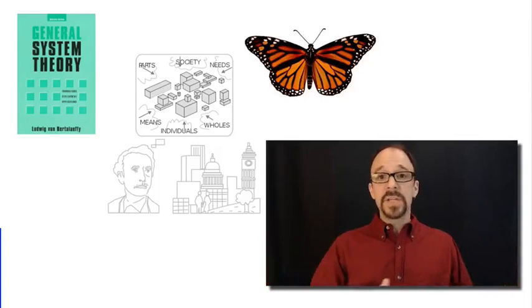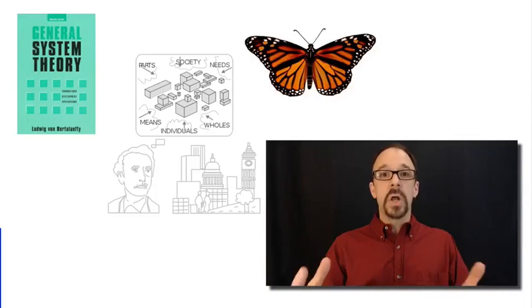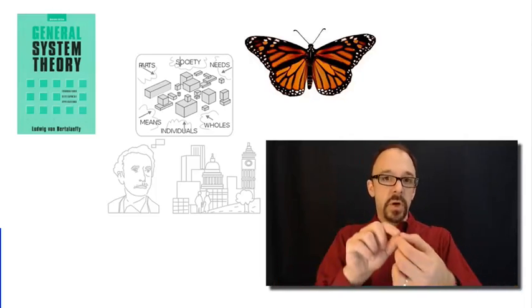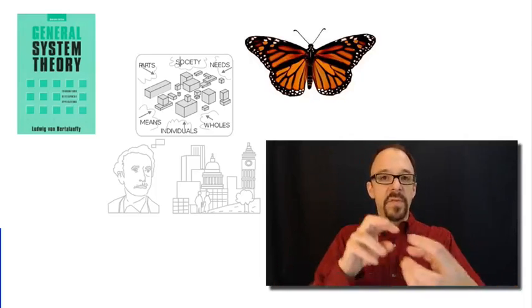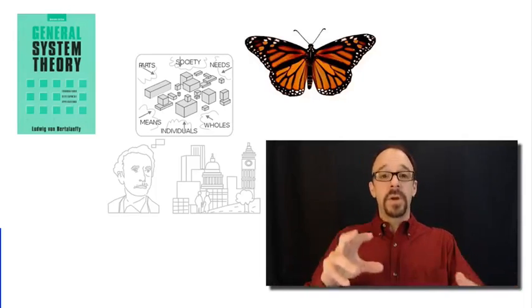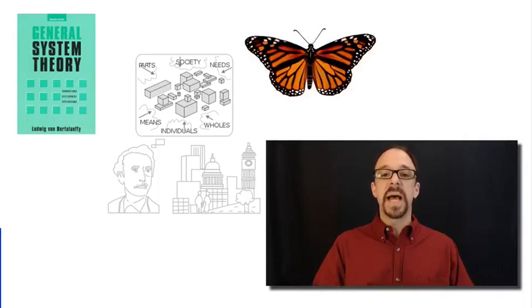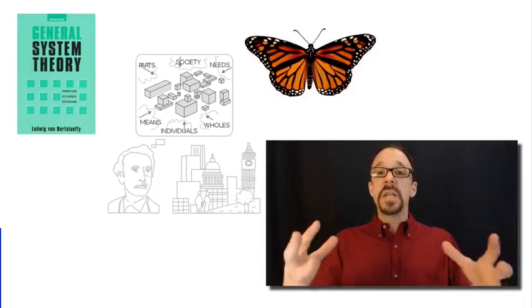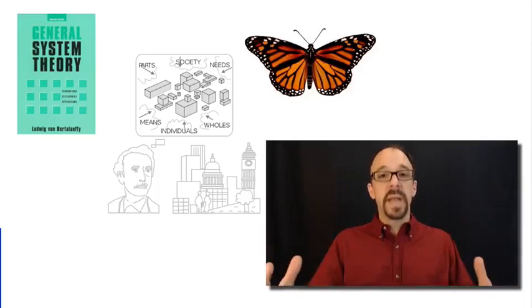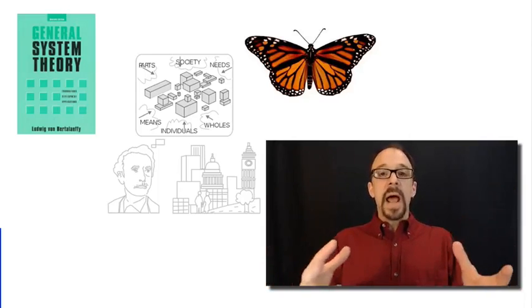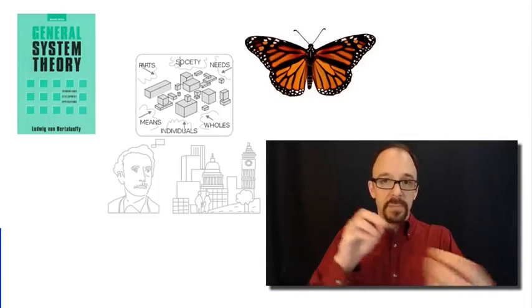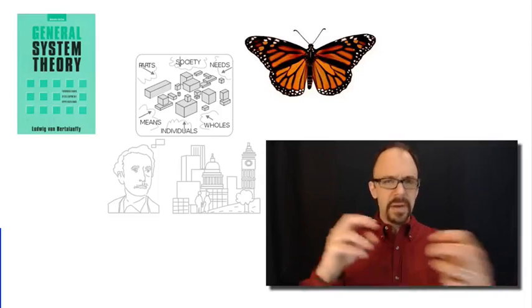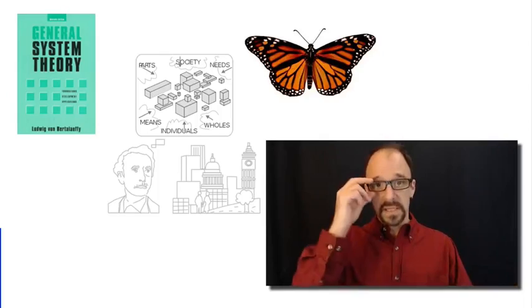The history of science really is all about pulling apart complex systems to look at one piece of it or a few pieces of it in isolation. But the question that system science tried to tackle was, how can you take these very complex things and study them in all their richness and complexity without having to be reductionist about it and peel apart tiny pieces and pretend that those tiny pieces exist in isolation.